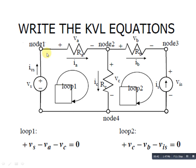First of all I will mention plus and minus signs according to the clockwise direction for a particular loop. For loop 1, I will assign the plus and minus signs. Remember, you can take the plus and minus signs according to your choice. So for loop 1 we assign: plus, minus, plus, minus, minus, plus — this is our standard plus-minus sign assignment.